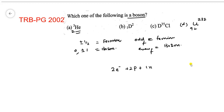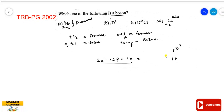For Deuterium: atomic number one, so it has one proton, one electron, and one neutron — again three fermion particles, which is an odd number. Electrons are fermions, protons are fermions, neutrons are fermions. Adding three fermions gives an odd total, so Deuterium is also a fermion.